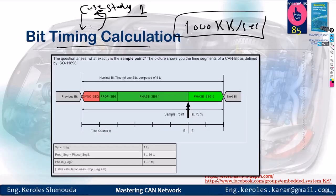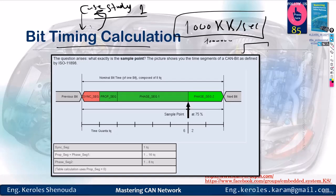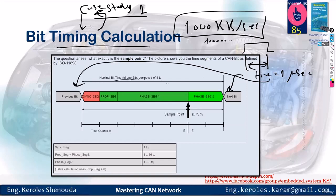If you're working at a speed of 1,000 kilobits per second, note that this topic is frequently asked in interviews. When you say you're sending 1 megabit per second, it means 1 million bits in 1 second, so a single bit takes 1 microsecond. This 1 microsecond is divided into 4 parts, and sampling happens at around 75%. These 4 parts have specific ranges controlled by registers. If you set these ranges incorrectly, you won't be able to receive correctly. This bit timing calculation is explained in full detail in case study 31.